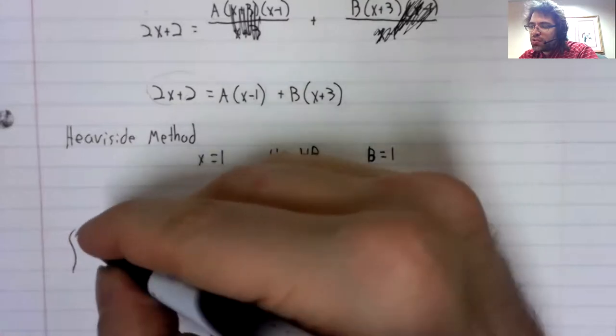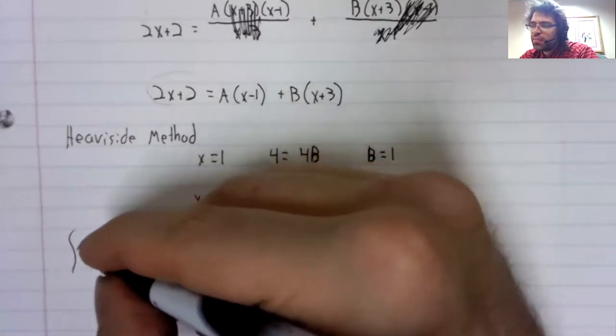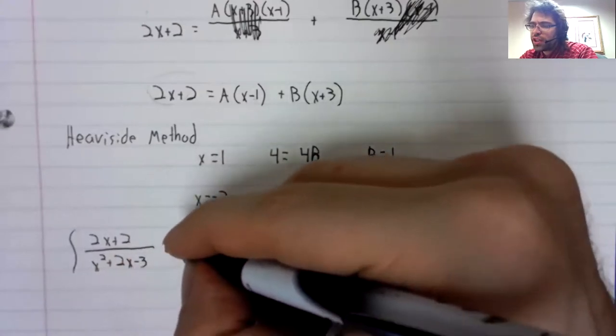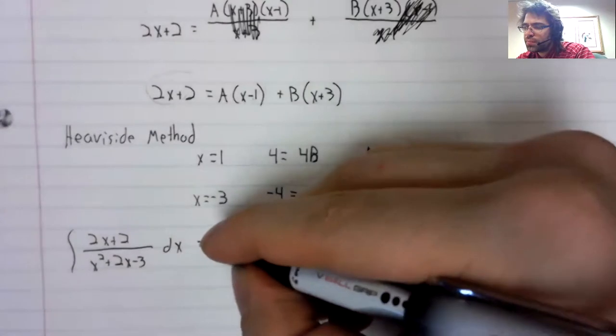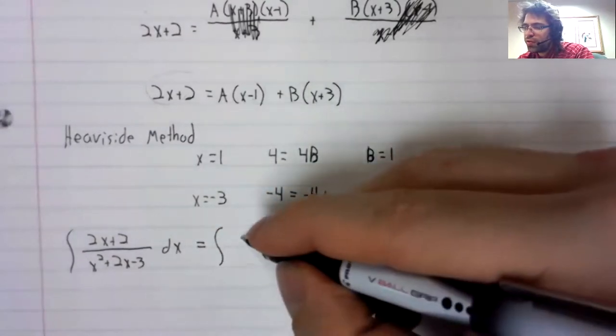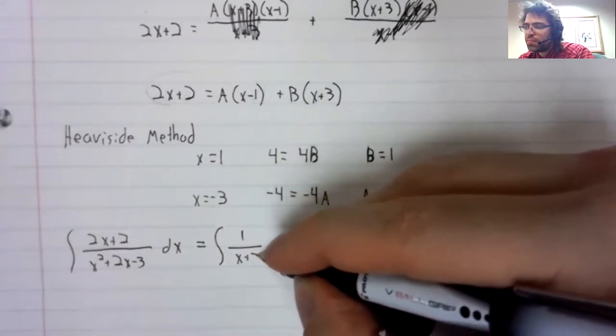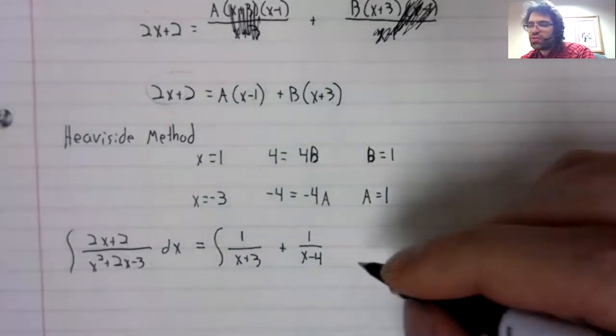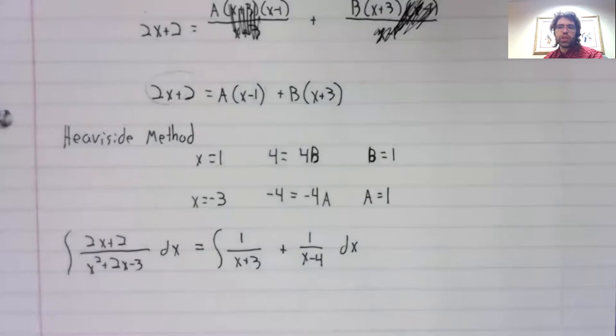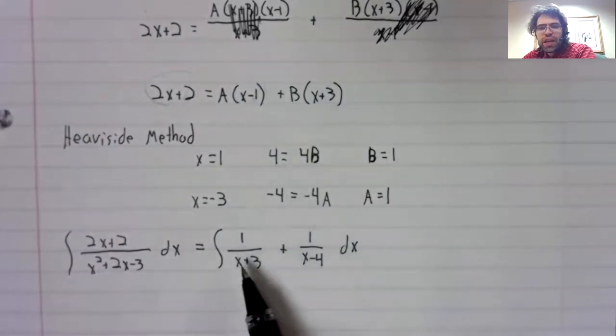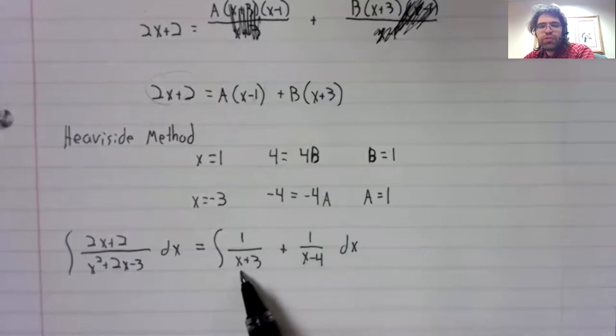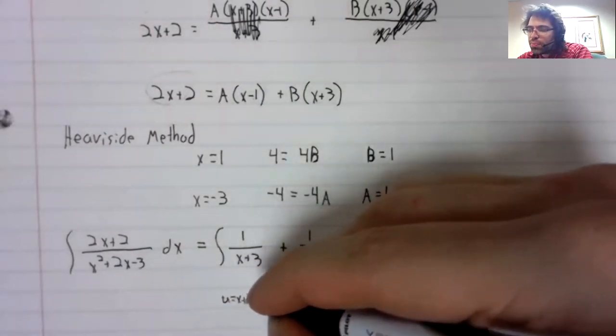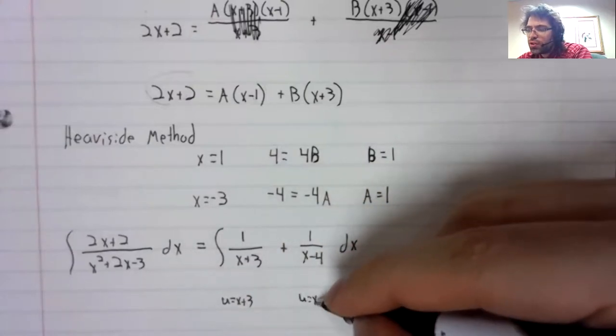And this rational function that we are integrating can therefore be rewritten as the sum of these simpler rational functions. And in fact, these are both simple enough to integrate. If you struggle with either of them, they can both be done using u substitution.